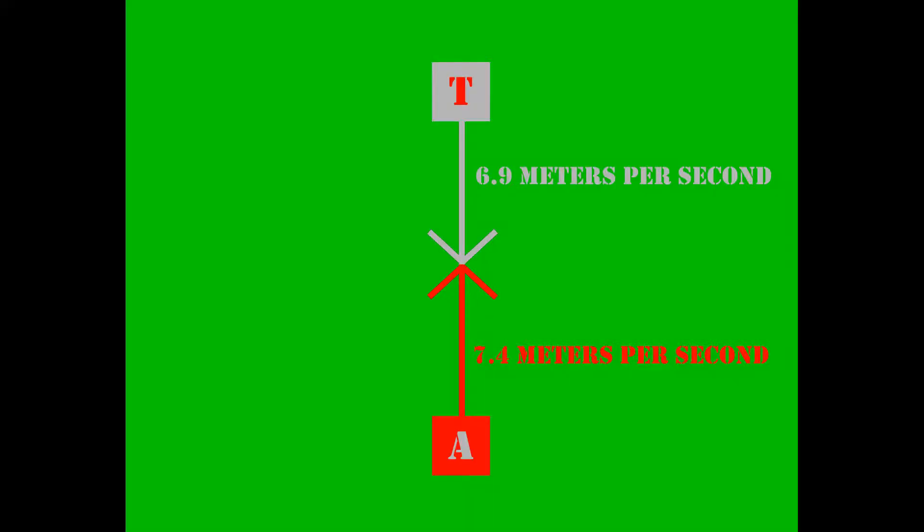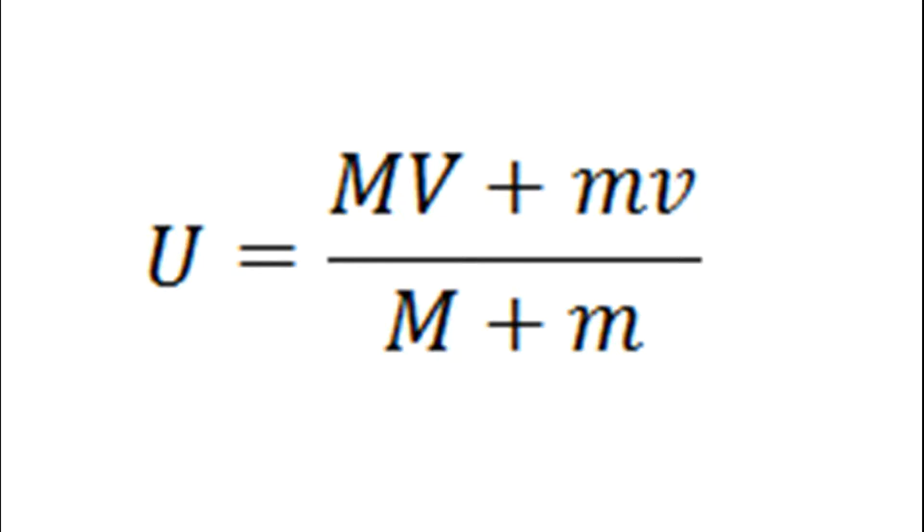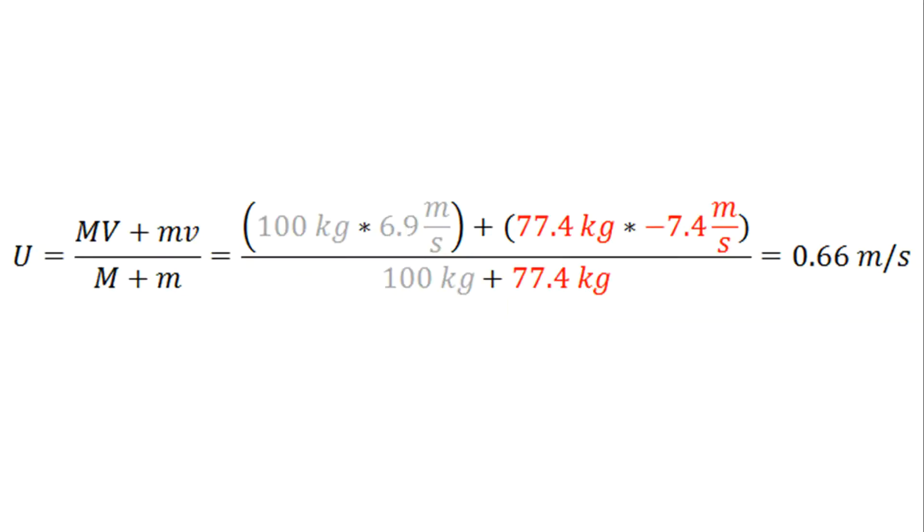Next, let us look at the combined speed of a head-on tackle. In this example, we are using the smaller, speedier Andrew as our defensive tackler. The combined speed of this head-on collision can be described by the equation Taylor's mass times velocity plus Andrew's mass times velocity divided by Taylor's mass plus Andrew's mass. When we plug in the numbers, we see that after the collision, the pair is traveling at 0.66 meters per second in the direction that Taylor was originally traveling.